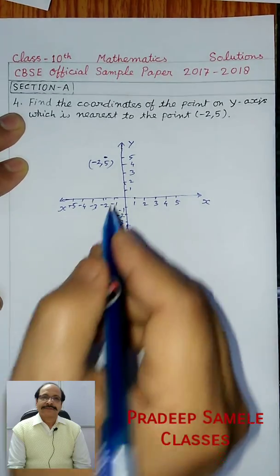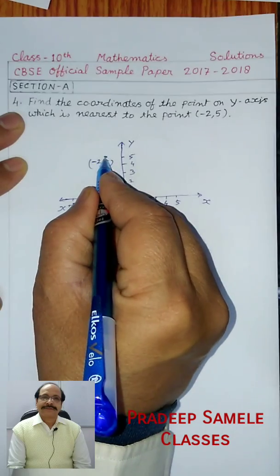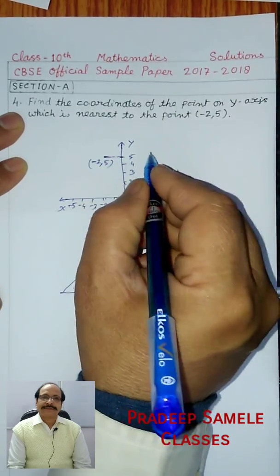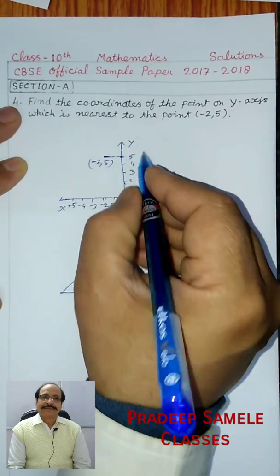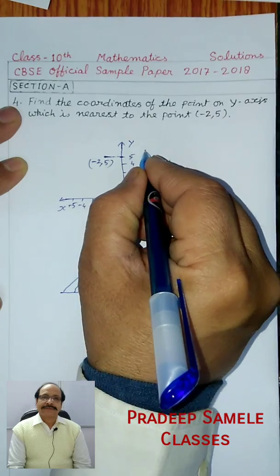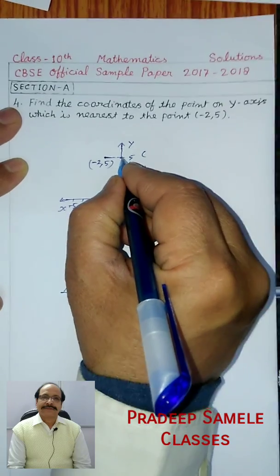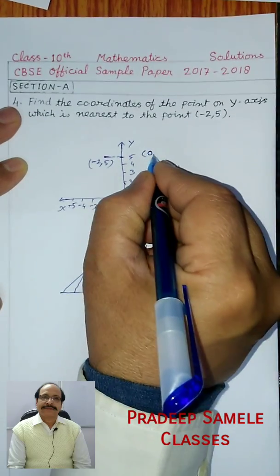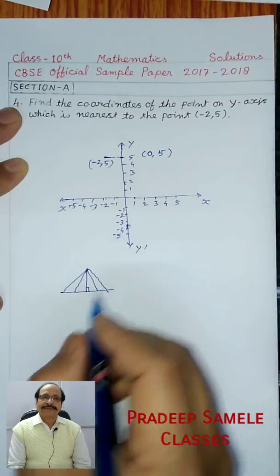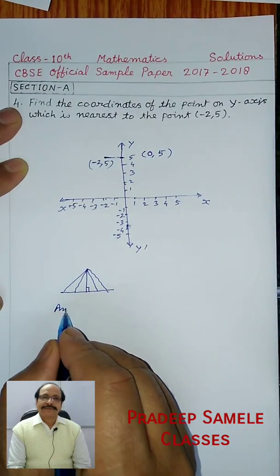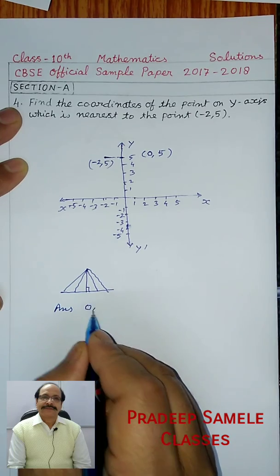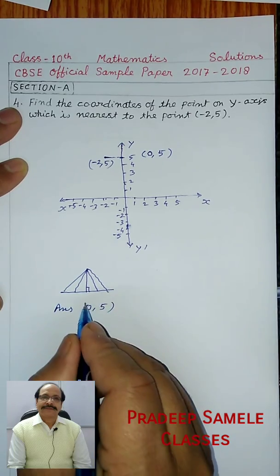So the nearest point is perpendicular to the y-axis. So what is the value? Find the coordinate point. So the value of the coordinate point is (0, 5).